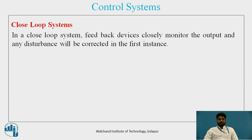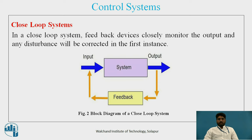Closed Loop System: In a closed loop system, feedback devices closely monitor the output and any disturbances will be corrected immediately. Therefore, high system accuracy is achievable. The system is more powerful than the open loop system and can be applied where the output is subjected to frequent change. Nowadays, almost all CNC machines use this control system. The output is monitored closely, and feedback is sent back to the input, as shown in figure 2 — the block diagram of the closed loop system.